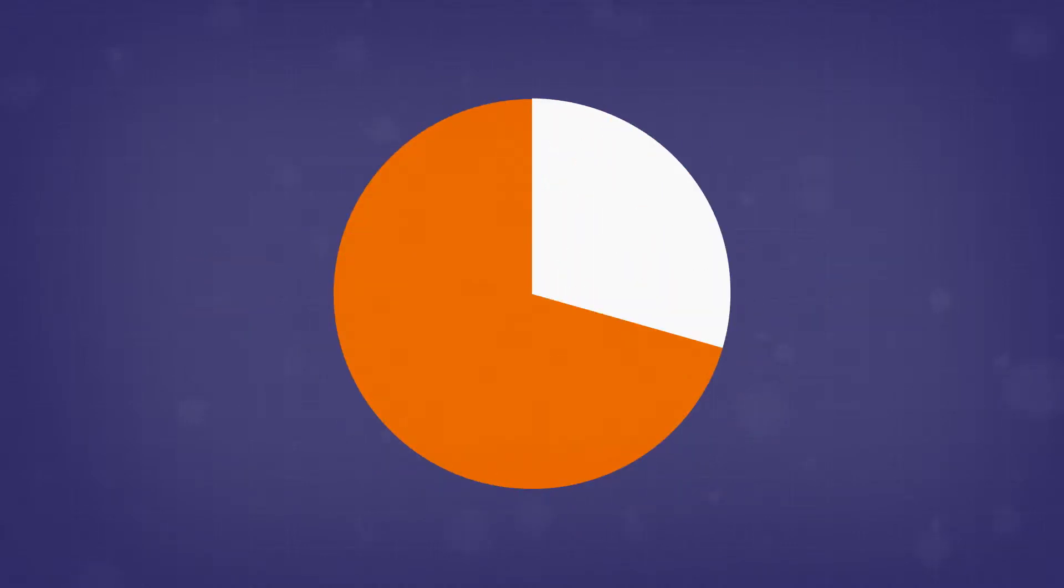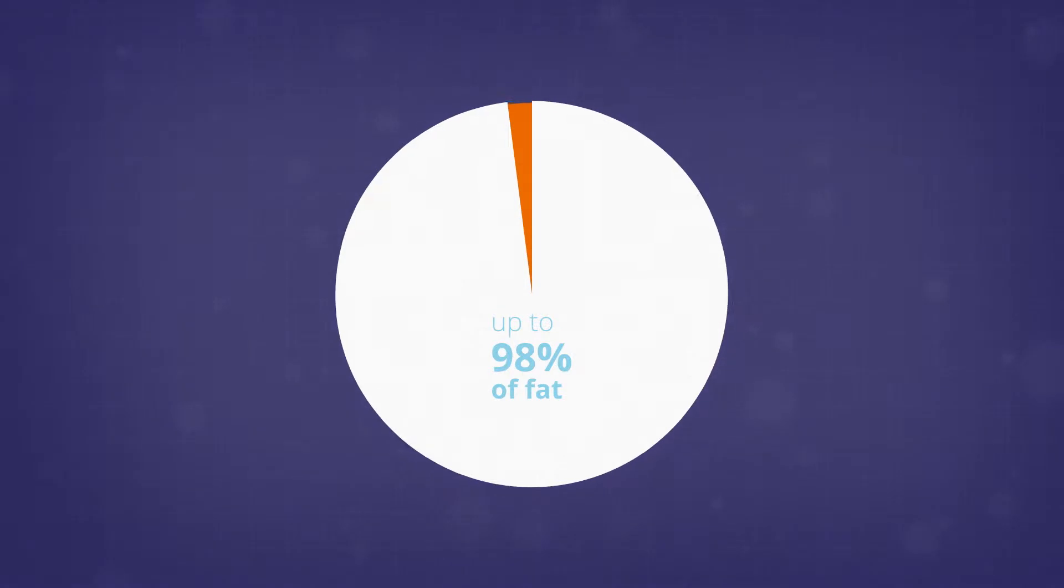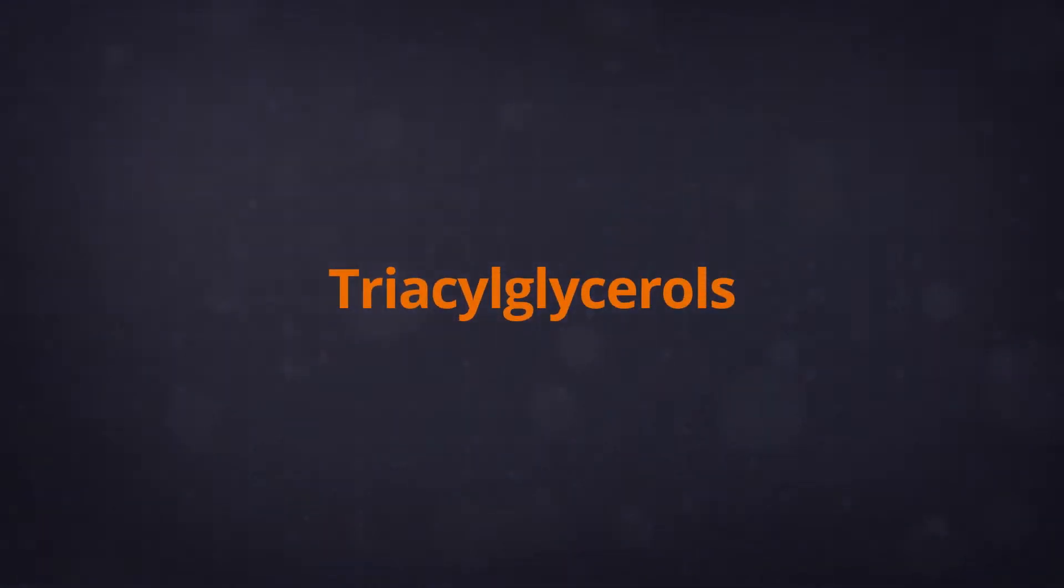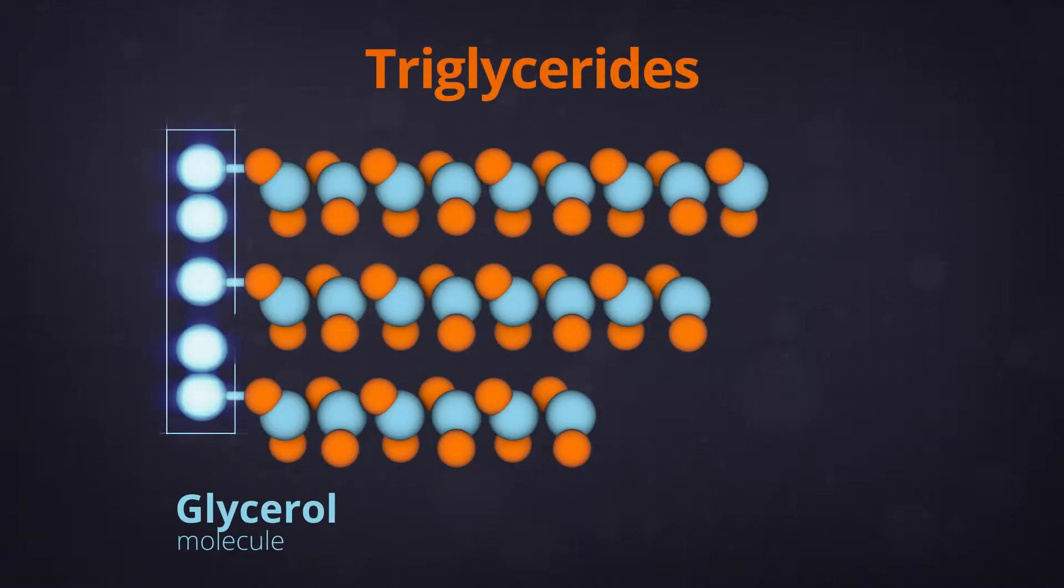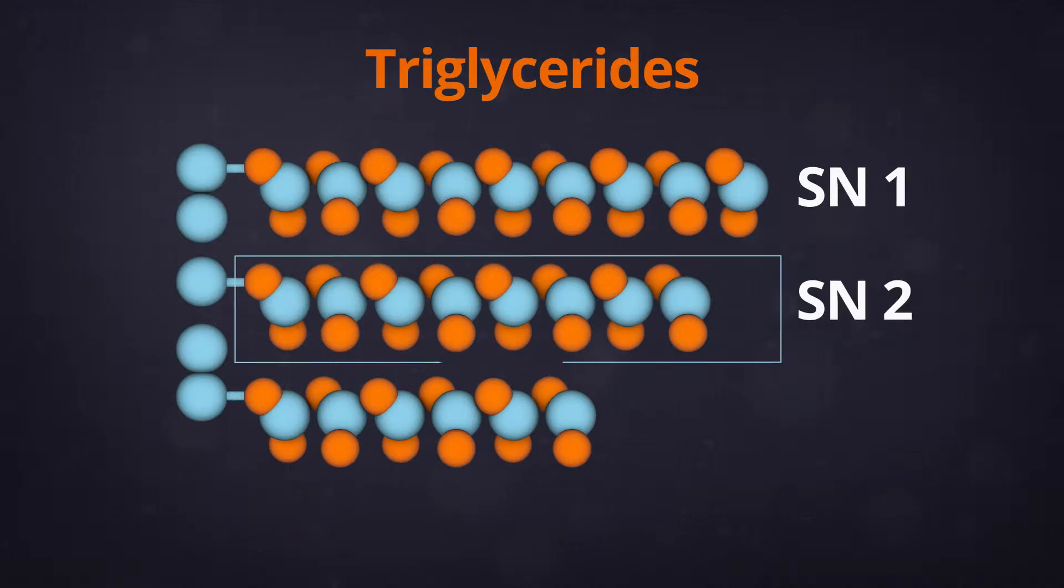Up to 98% of fat in breast milk is composed of triacylglycerol molecules, commonly known as triglycerides, which comprise three fatty acids esterified to the glycerol backbone at the SN1, SN2 and SN3 positions.